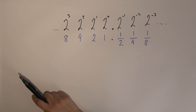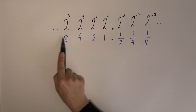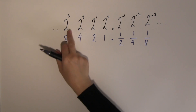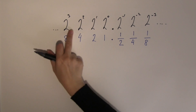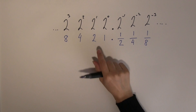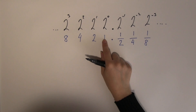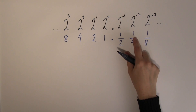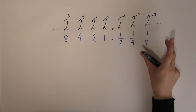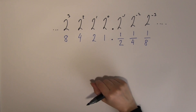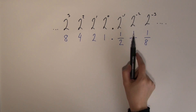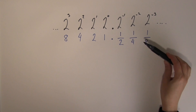This halving continues past the radix point: half of one is a half, half of a half is a quarter, half of a quarter is an eighth. Going back left, double of an eighth is a quarter, and double of a quarter is a half, because two quarters make a half and two eighths make a quarter.